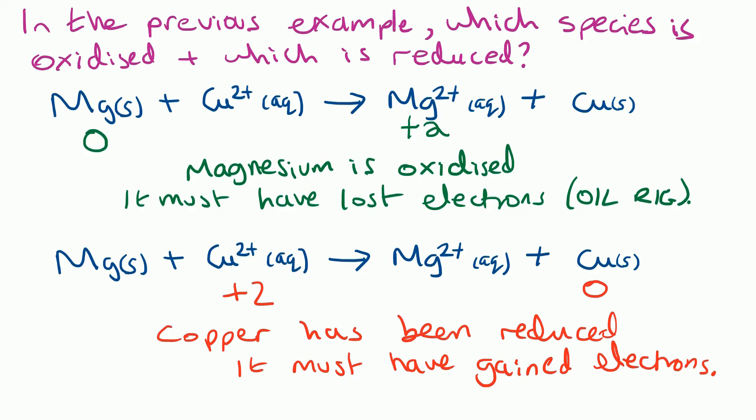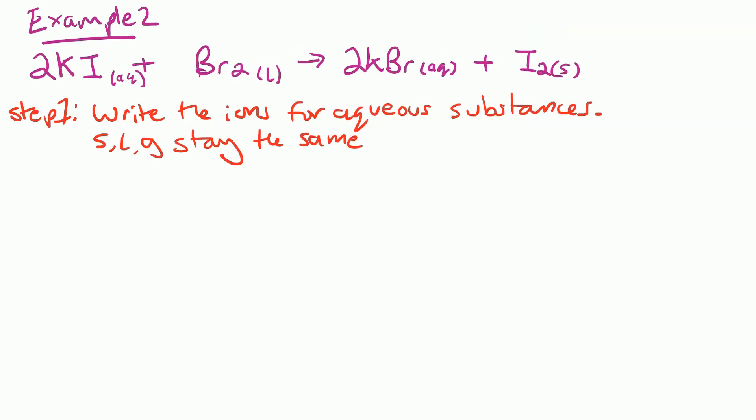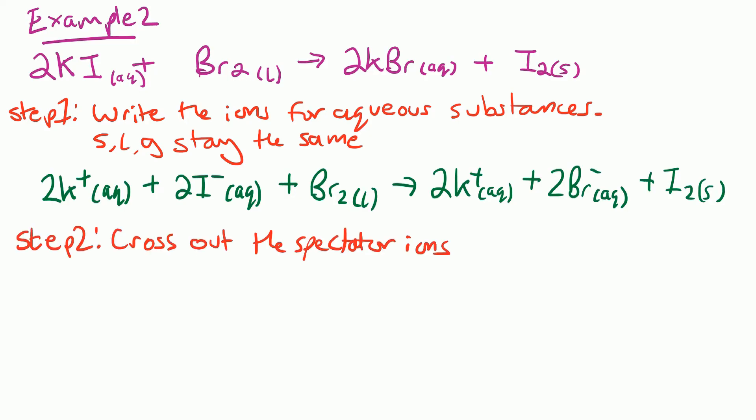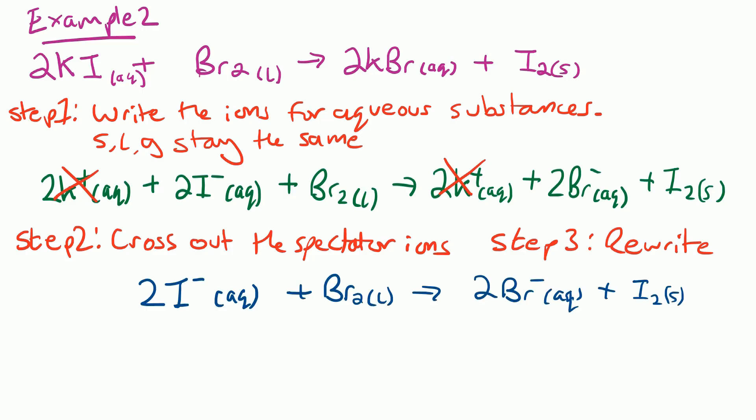Let's look at another example. Once again, step one is to write the ions for the aqueous substances. In 2KI we've got two K⁺ ions and two I⁻ ions on the left. Br₂ stays the same as it's a liquid. On the right we've got two K⁺ and two Br⁻ ions as that is the aqueous substance, and I₂ stays the same as that is a solid. We then cross out the spectator ions — in this case it's the 2K⁺ that don't change — then rewrite the equation, and there we have our ionic equation.